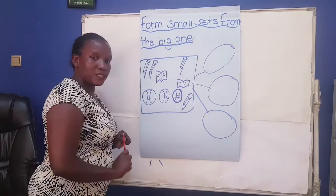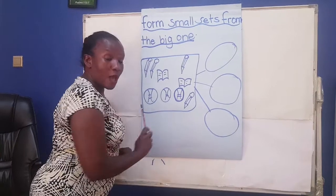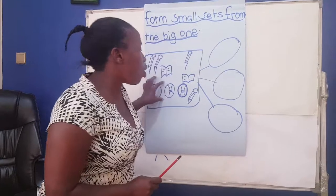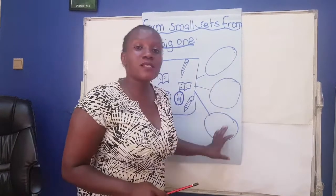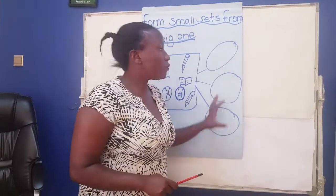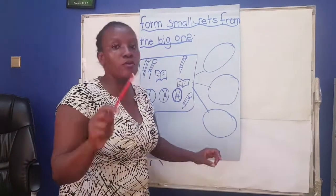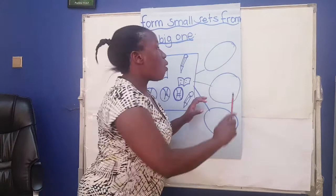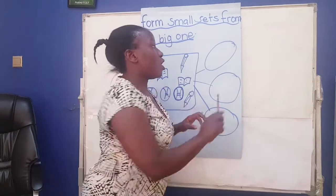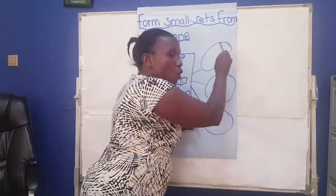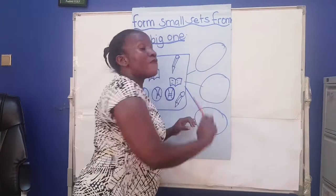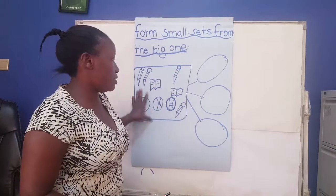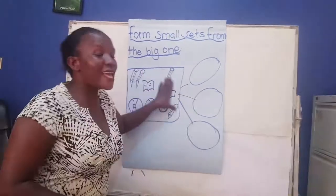I have pencils, I have books, and I have balls. We are going to distribute these objects into these circles. Whenever you draw objects and you want to form a set, you put them in a circle. When you put them in a circle, they become a set. Now we are going to form sets from this big set.